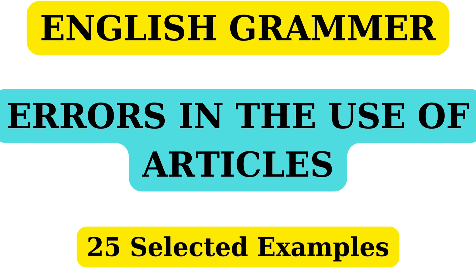Types of articles: definite articles and indefinite articles. Definite articles: 'the'. Indefinite articles: 'a' and 'an'.